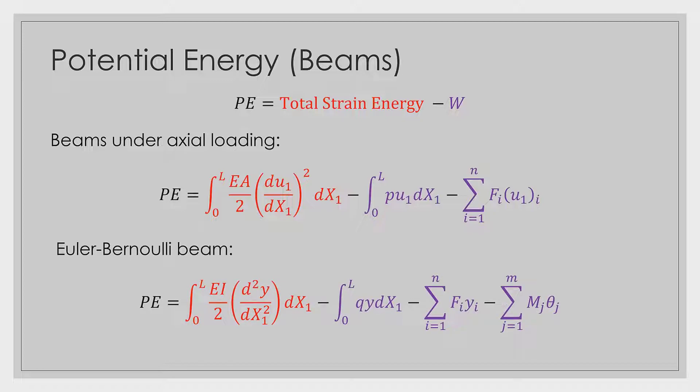We also have the Euler-Bernoulli beam case — beams subjected to bending. We can find our total strain energy from the formula; L and EI are typically given. The only real unknown you may struggle with is the deflection function Y, but we know how to calculate that. Then we subtract all the forces multiplied by their corresponding displacements — or in the case of a concentrated moment, its rotation. The formulas are not too bad at all; you guys are experts.